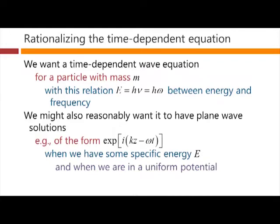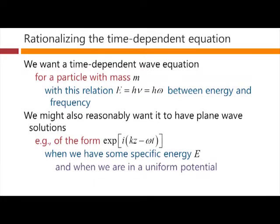And of course we're interested in the case where this might happen when we have a specific energy. We've been talking about solutions like this when thinking about the time-independent Schrödinger equation — we were hoping we could have plane waves, though there we did not get into discussing any time dependence. We had plane waves when we had a specific energy E and when we were sitting in a uniform potential. So we're hoping now we'll be able to construct an equation that has all of these properties.